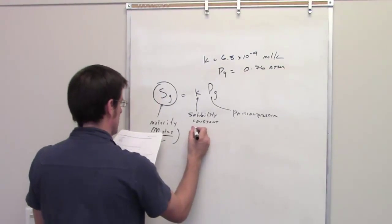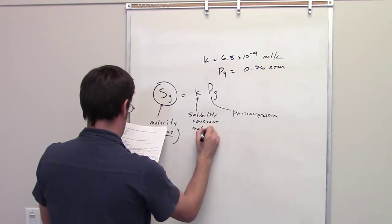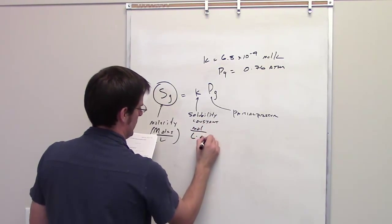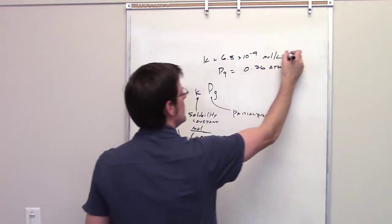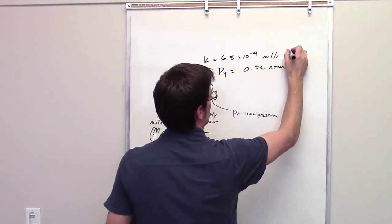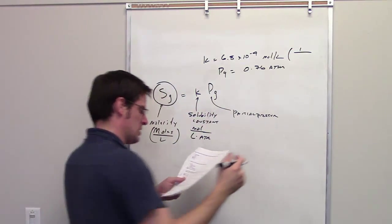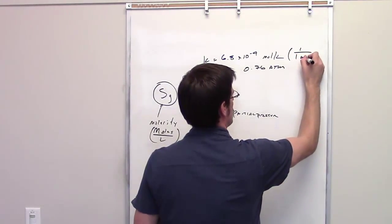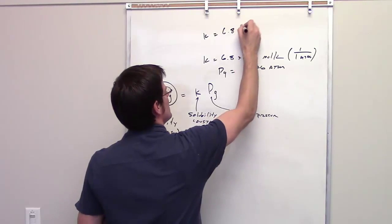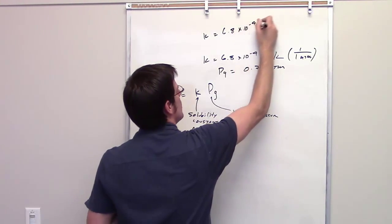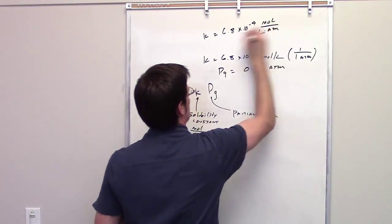I should point out that the solubility constant has to be in units of moles per liter atmosphere, and the way you handle that is by taking this value and dividing it by, or multiplying it, I guess, by one over the pressure that we've been given, which in this problem is one atmosphere. So the true value of K is equal to 6.8 times 10 to the negative fourth moles per liter atmosphere in this particular problem.